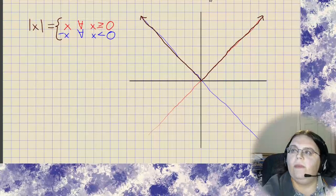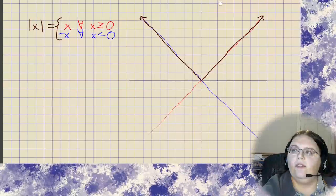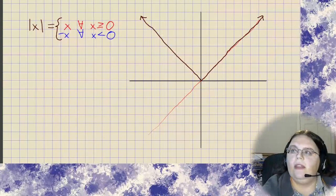From there we can erase the two we don't need, and there we have a graph of the absolute value function.